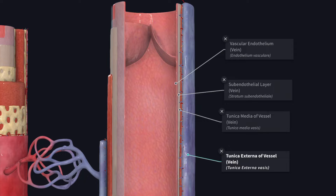In large veins all these three layers are well defined. Let's see how the structure of the vein differs from that of the artery.